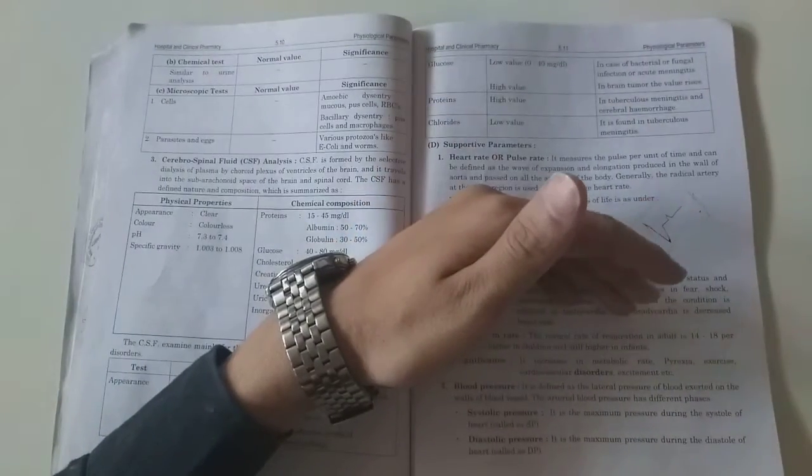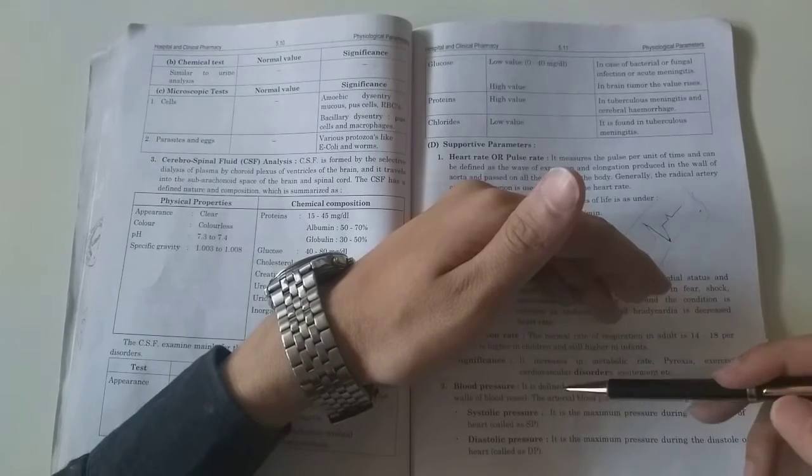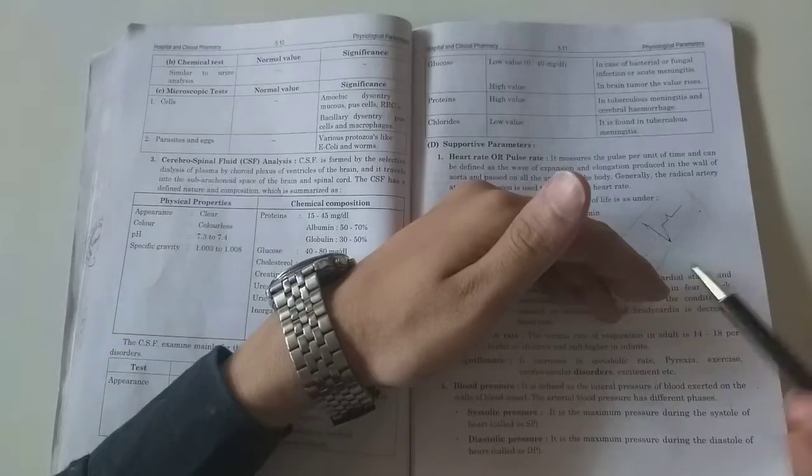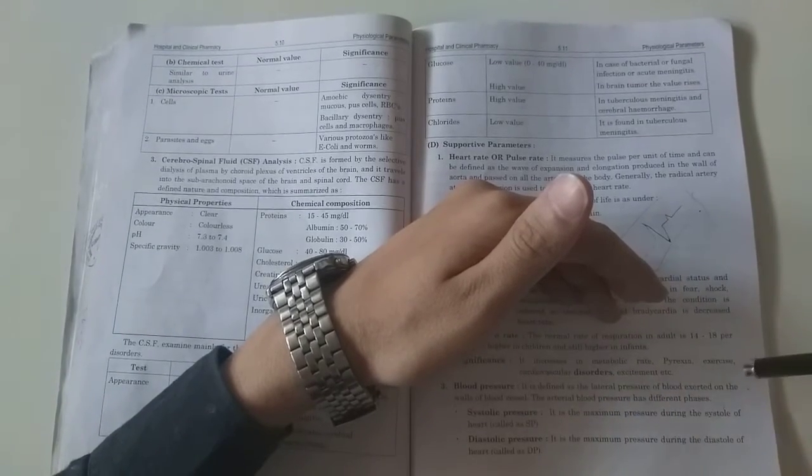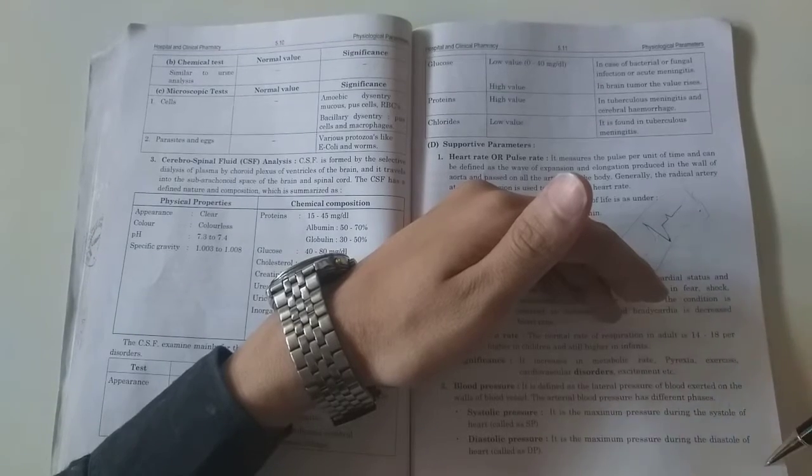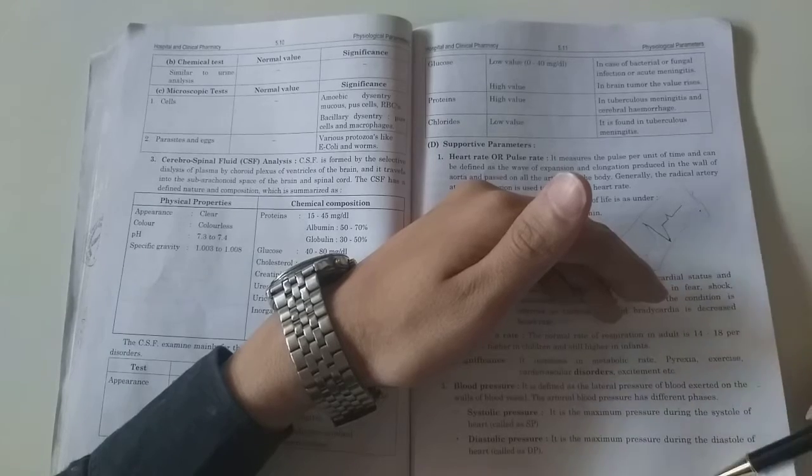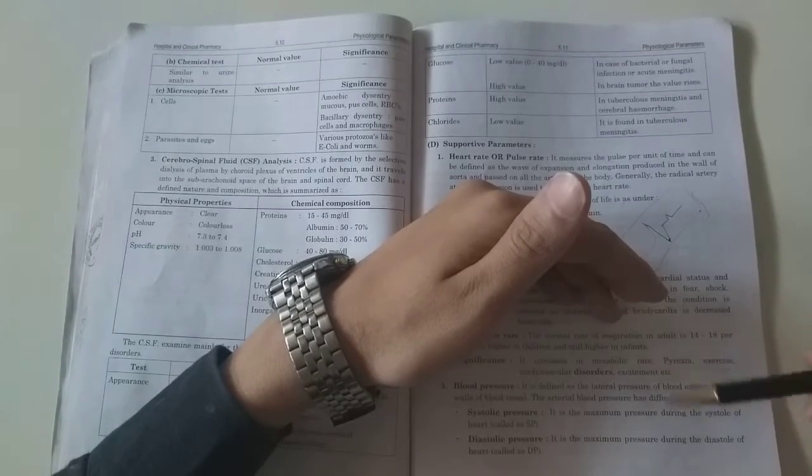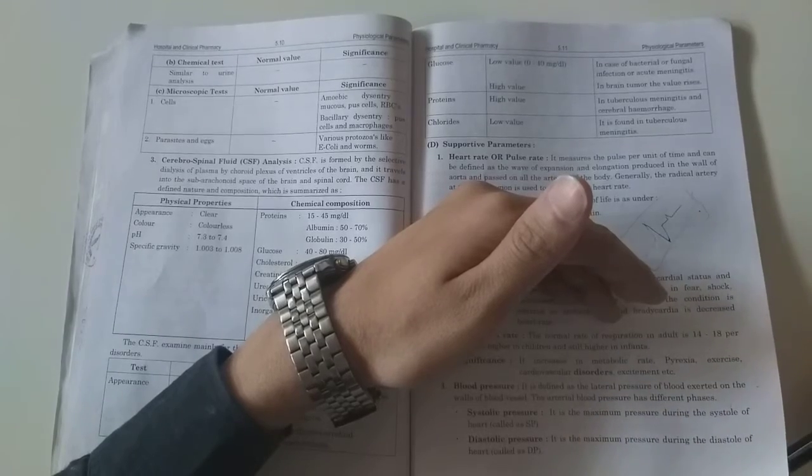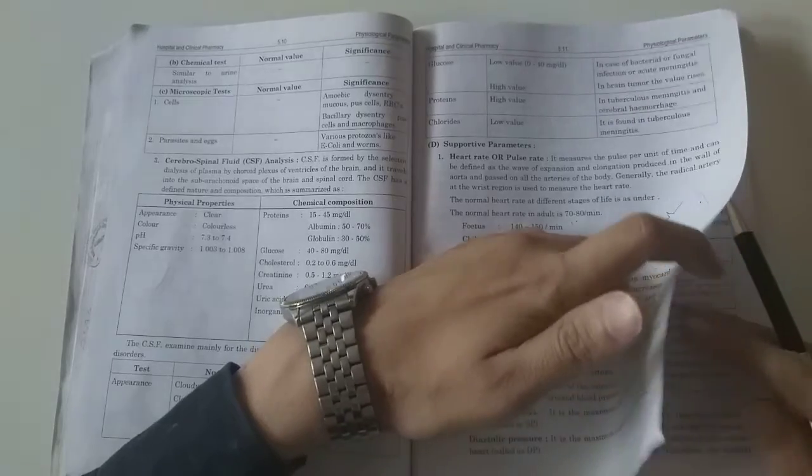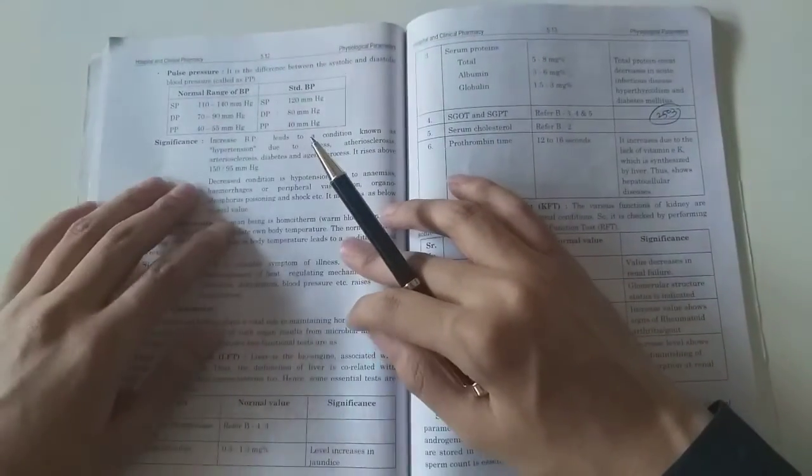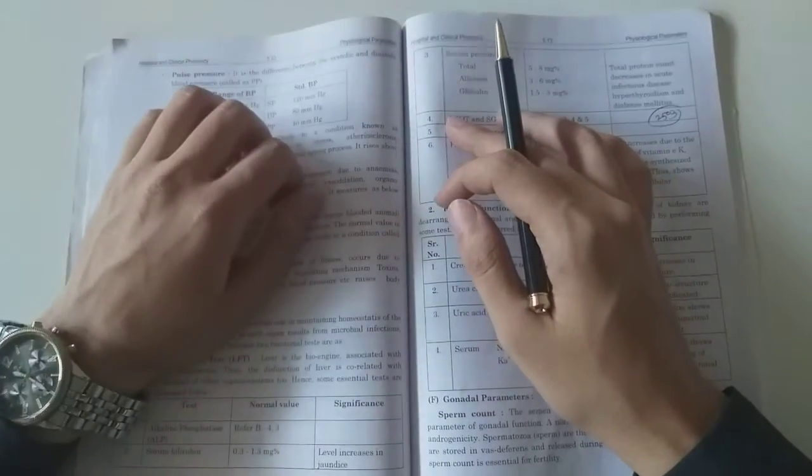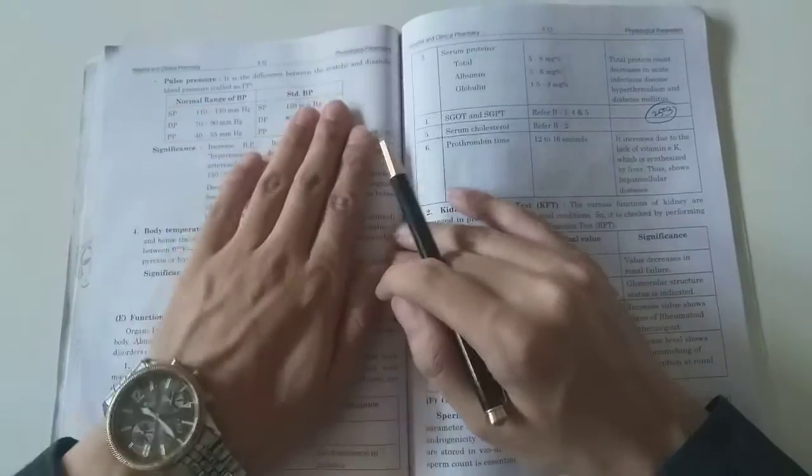Blood pressure is defined as the lateral pressure of blood exerted on the walls of blood vessels. The arterial blood pressure has different phases. Systolic pressure is the maximum pressure during systole of the heart. Diastolic pressure is the minimum pressure during diastole. Pulse pressure is the difference between systolic and diastolic pressure.